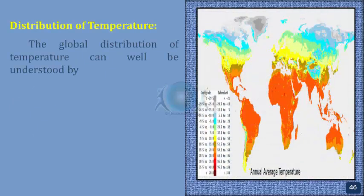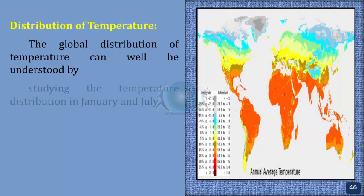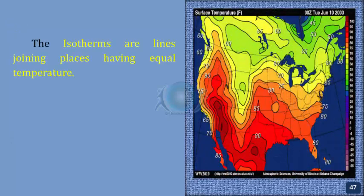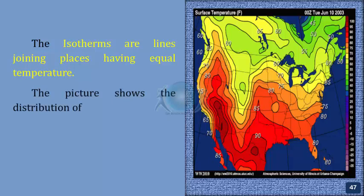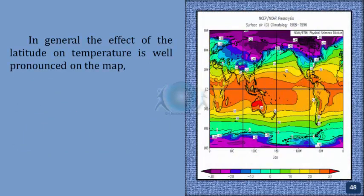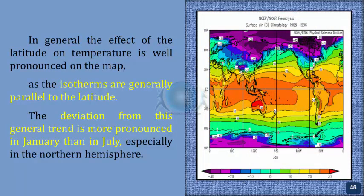Distribution of temperature. The global distribution of temperature can be well understood by studying the temperature distribution in January and July. The temperature distribution is generally shown on the map with the help of isotherms — lines joining places having equal temperature. In general, the effect of latitude on temperature is well pronounced on the map as the isotherms are generally parallel to the latitudes. The deviation from this general trend is more pronounced in January than in July, especially in the northern hemisphere.